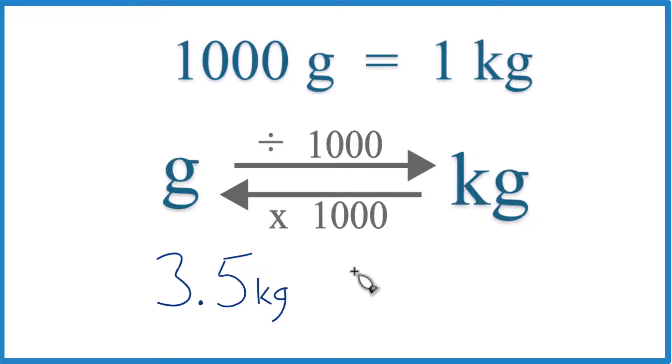Here we have 3.5 kilograms, we want to get grams. So we're going to multiply by 1,000, like this.